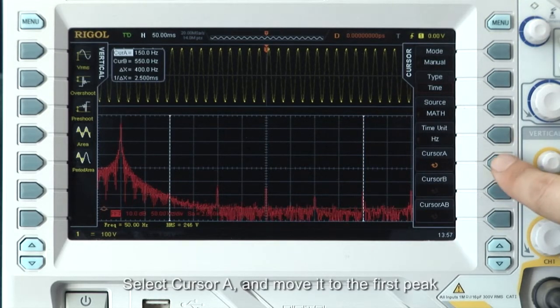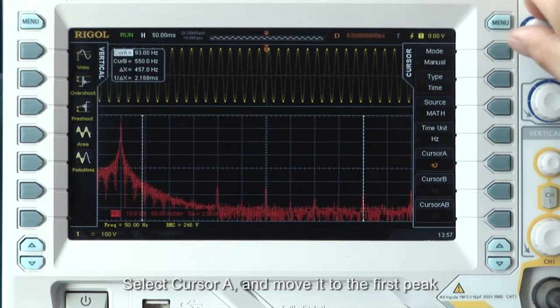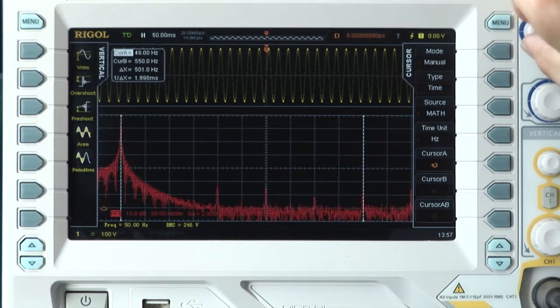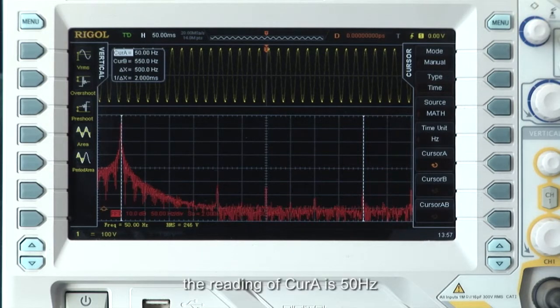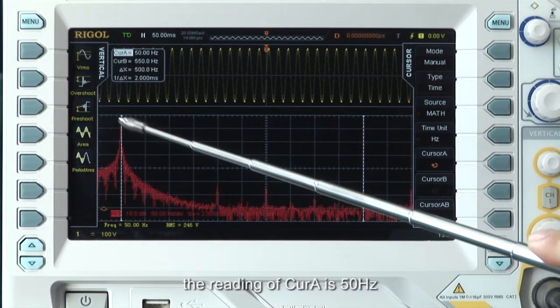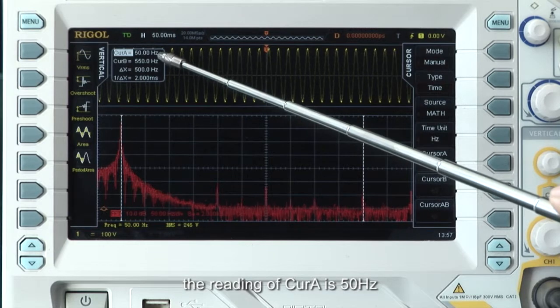Select cursor A and move it to the first peak. The reading of cursor A is 50 hertz, the fundamental frequency of the AC line.